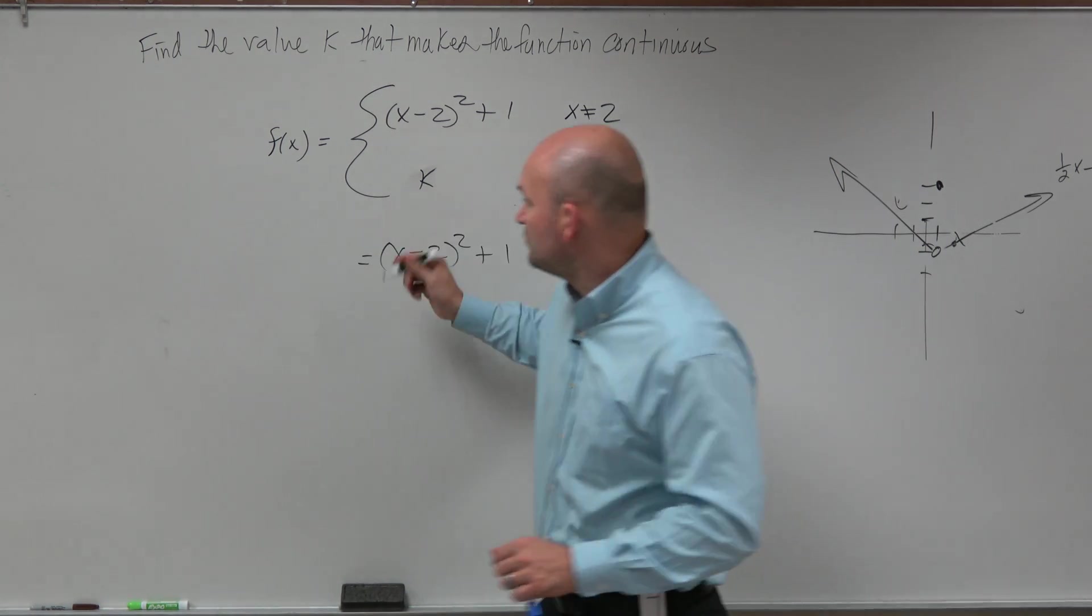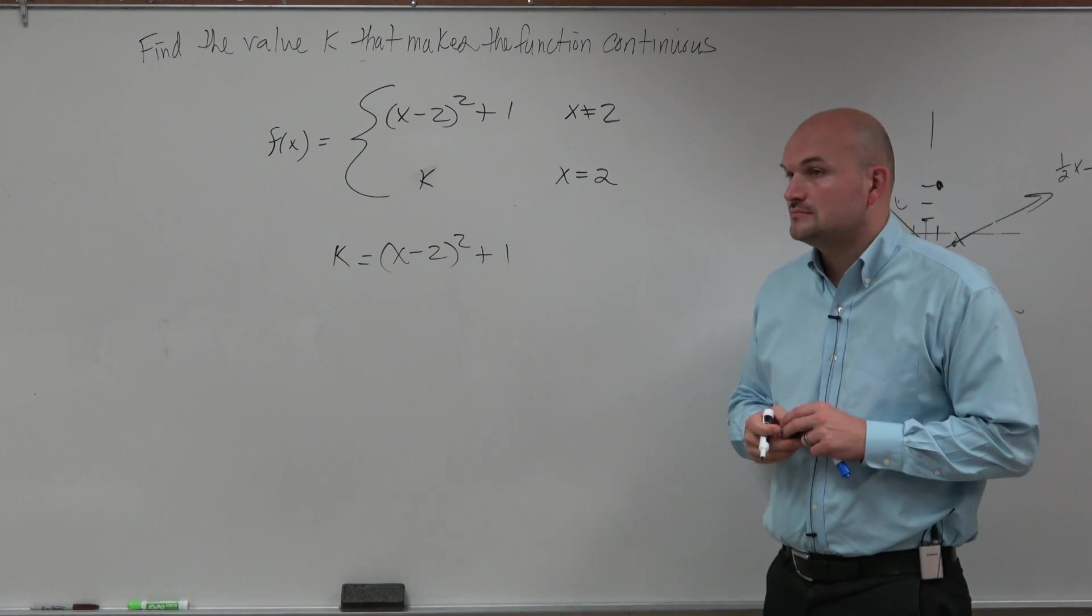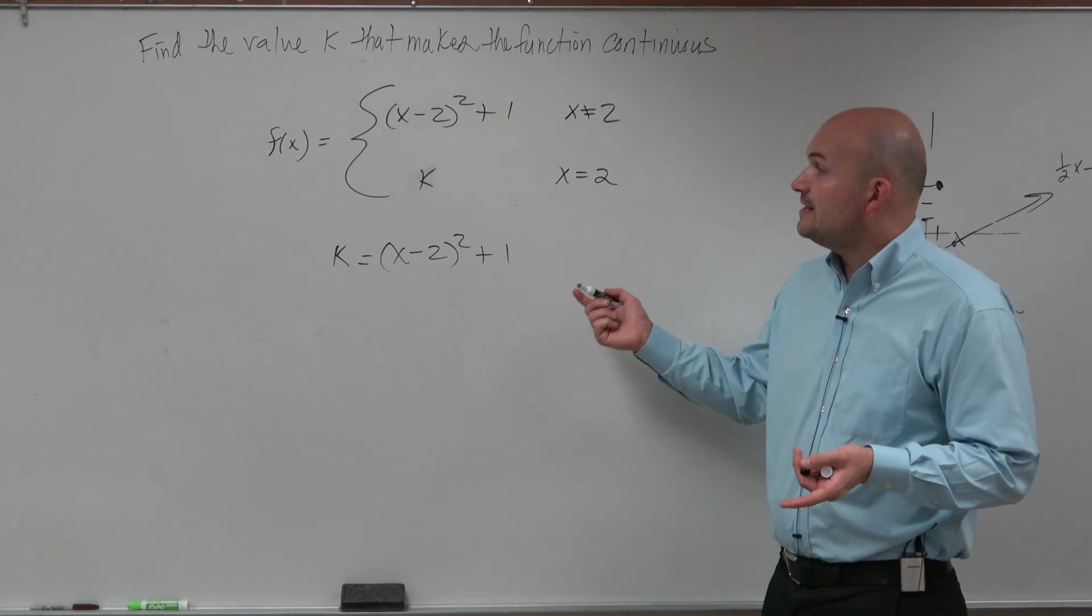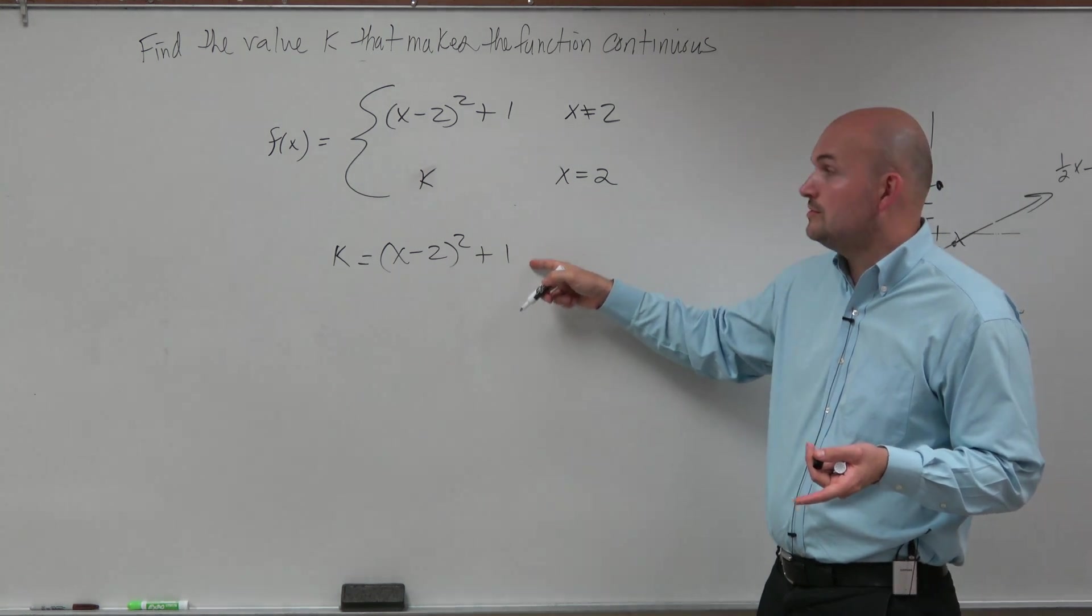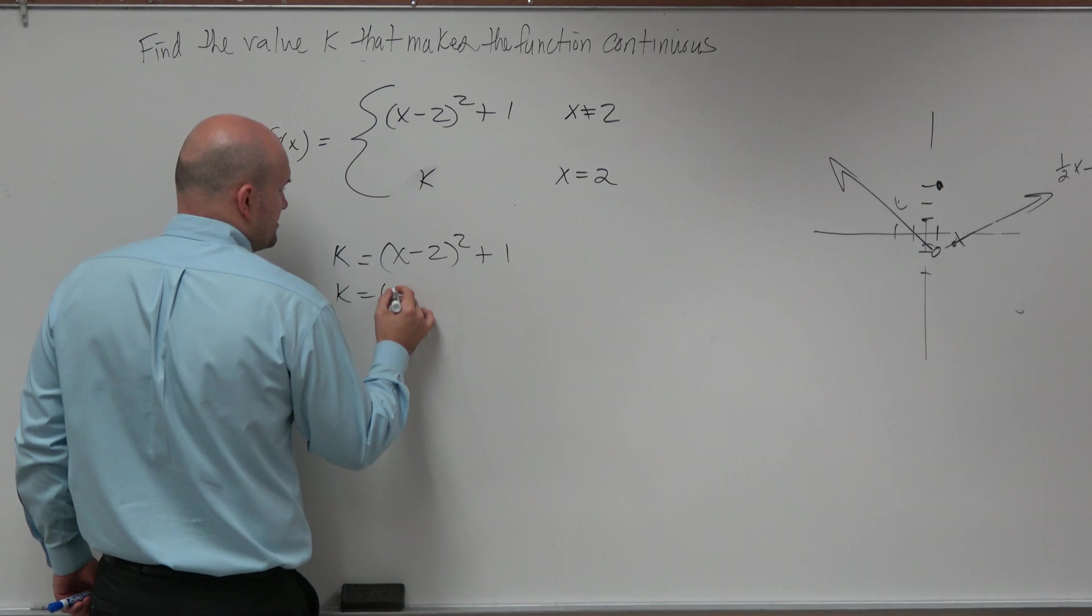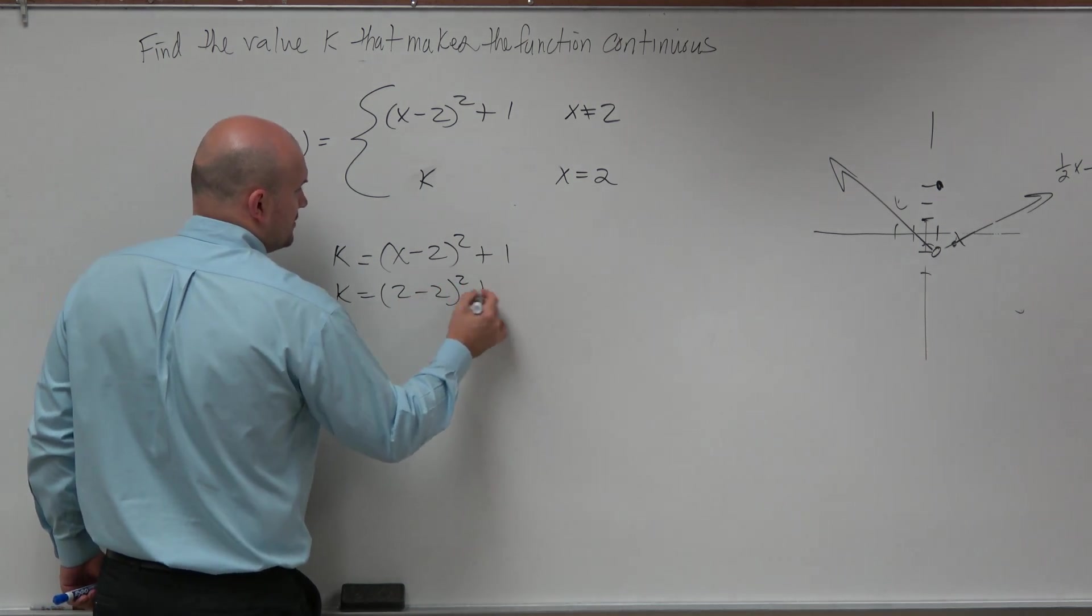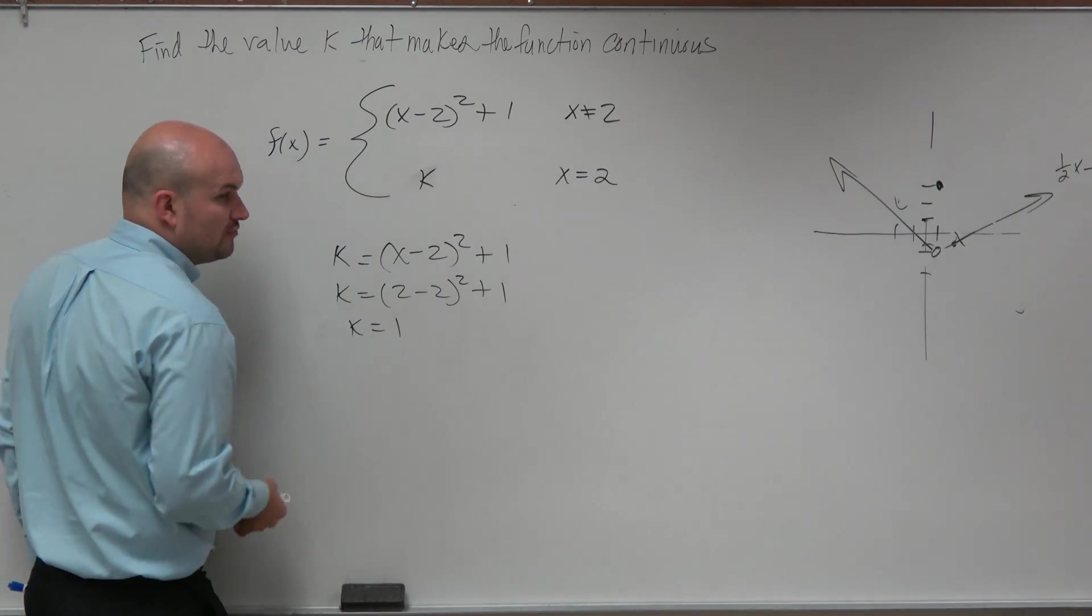So k is what we're trying to find, OK? And then again, what are we trying to find k at? We're trying to find k when x is equal to 2. So all we're simply going to do is plug 2 in for there. 2 minus 2 is 0, 0 squared is 0, k equals positive 1.